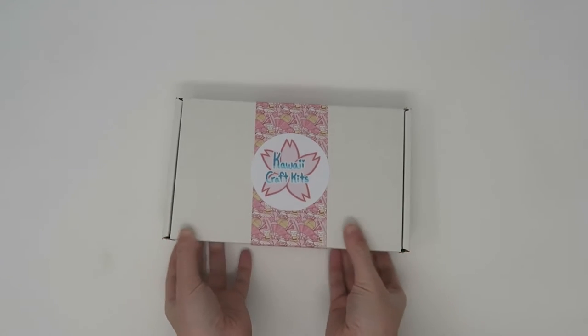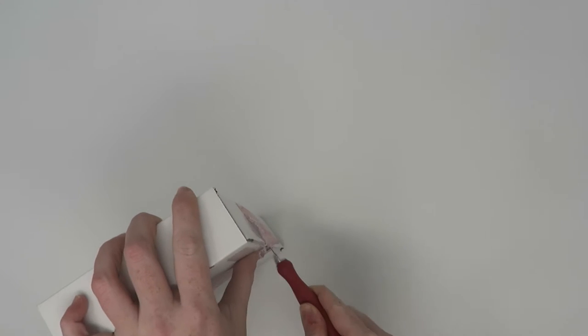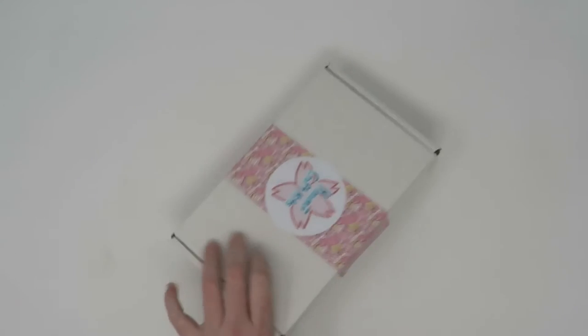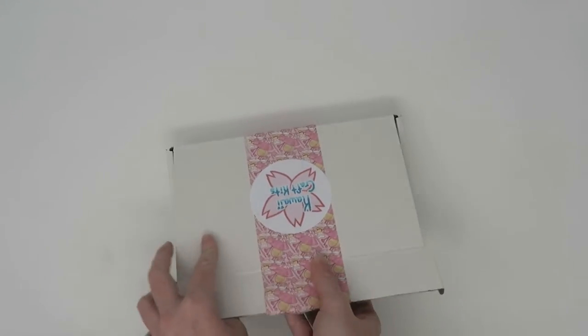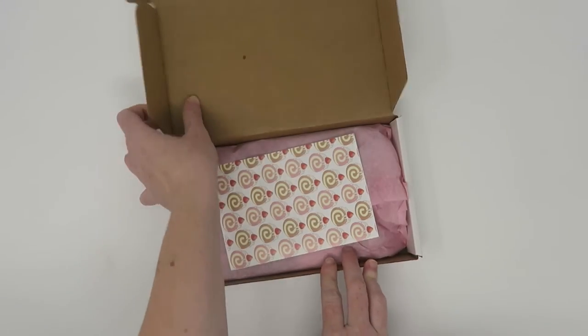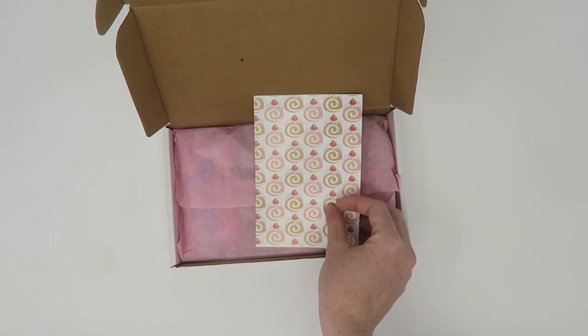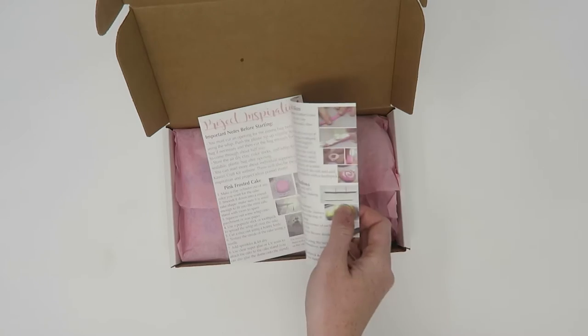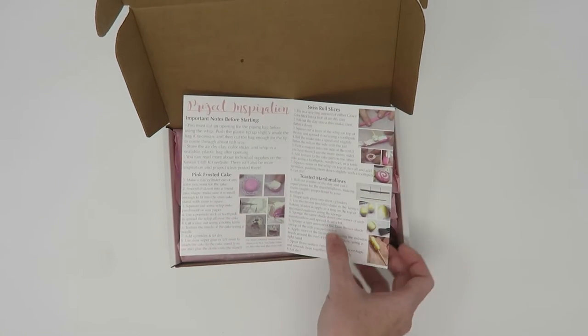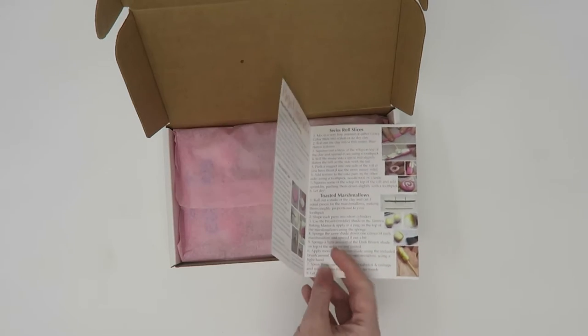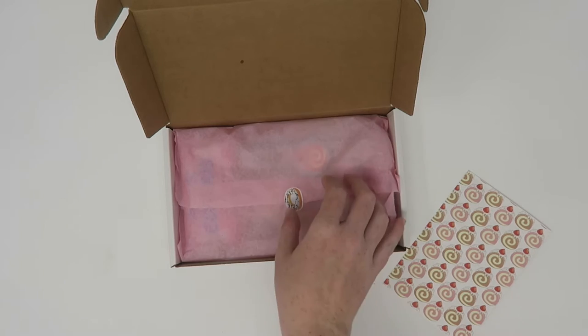So here is the box for the January Kawaii Craft Kit and I'm just going to take a craft knife and open it up and show you guys what's inside this month. The first thing on top is the insert which includes all the supplies, project inspiration, and a note from myself on the back. The design on the front is a repeating pattern of the illustration that's on the pin for this month.